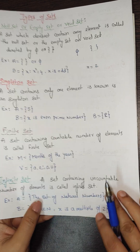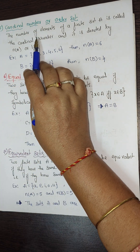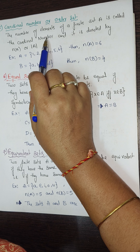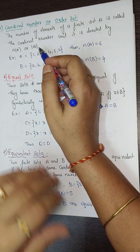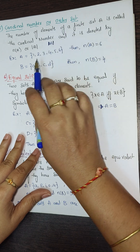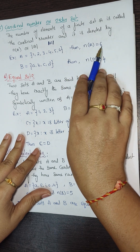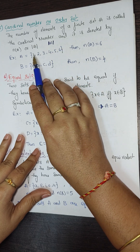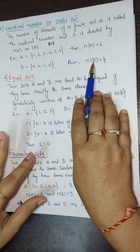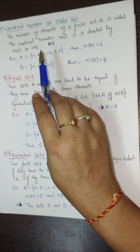Next is the cardinal number or order of a set. The number of elements in a finite set A is called its cardinal number, denoted by n(A) or |A|. For example, if A = {1, 2, 3, 4, 5, 6}, then n(A) = 6 because it contains 6 elements. If B = {a, b, c, d}, then n(B) = 4. Cardinal number means simply the number of elements.